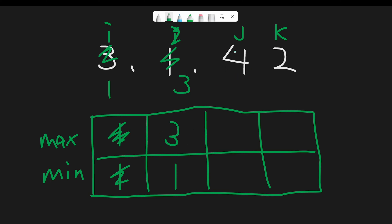Moving next, we find 4 and compare with the current max of 3. Since 4 is greater than 3, we pop 3 from the stack, add 4 to the stack, and recalculate the current minimum. Still 1 is the smallest minimum number, so we keep 1 as the minimum.